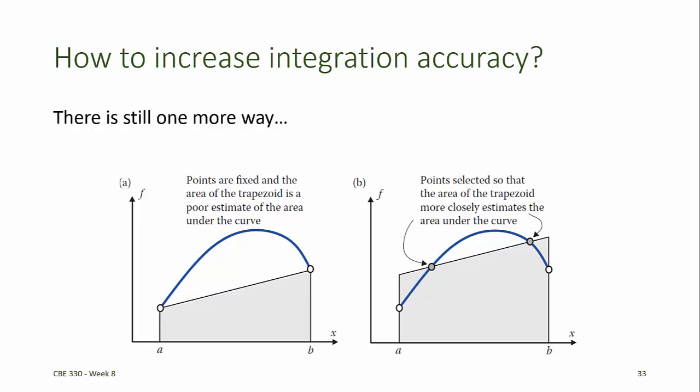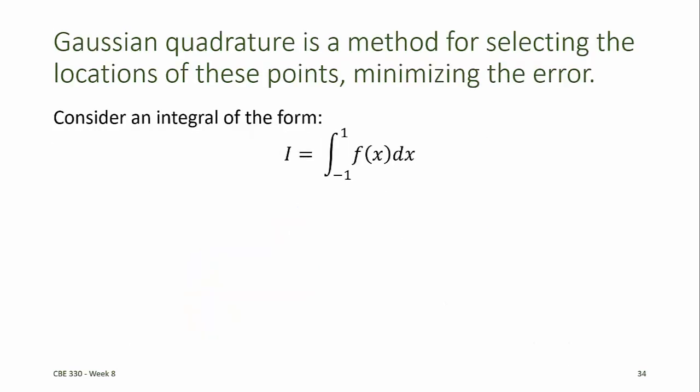The trick is to be able to make the selection of exactly where those points should be. Gaussian quadrature does this. It's an integral estimate method that changes the locations of the points at which the function is approximated before calculating the integral.